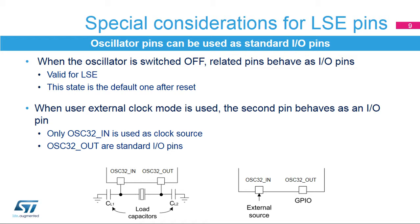When the external clock source is used instead of a crystal oscillator, only the OSC32 in-pin is used for the clock, and the OSC32 out-pin can be used as a standard I/O pin. The STM32 WB high-speed oscillator pins are dedicated to the OSC in and OSC out functions and have no standard I/O function.